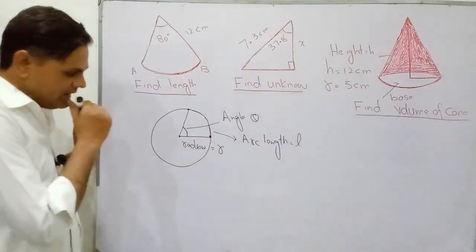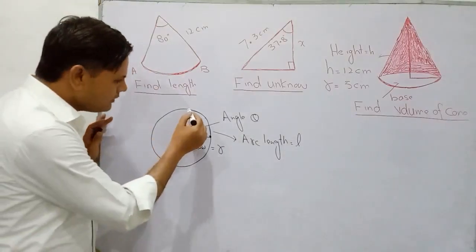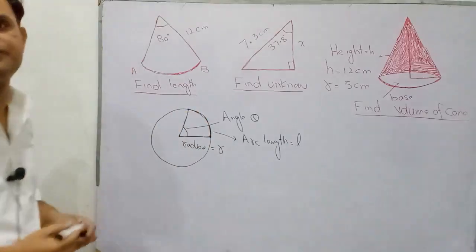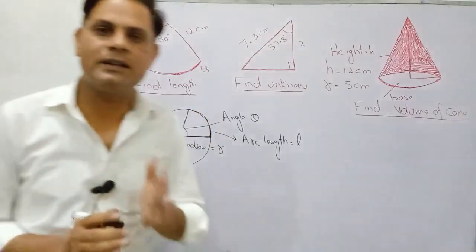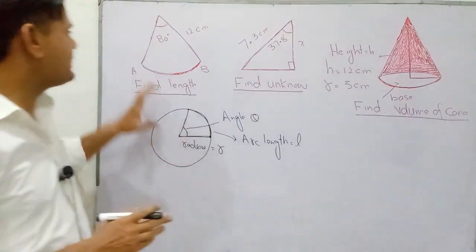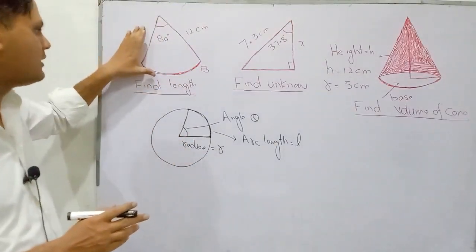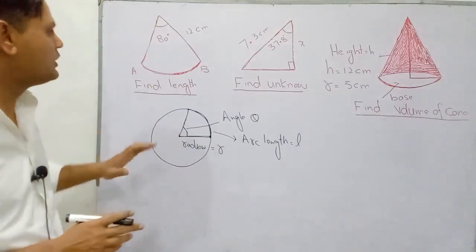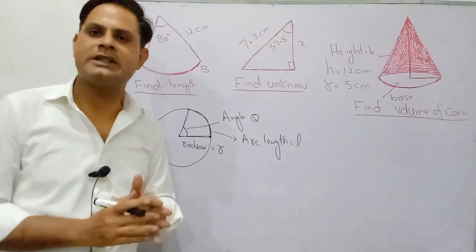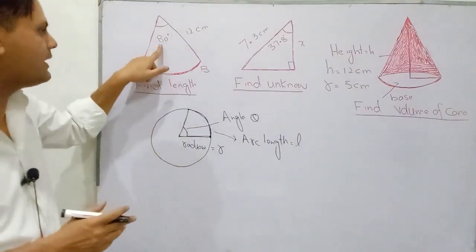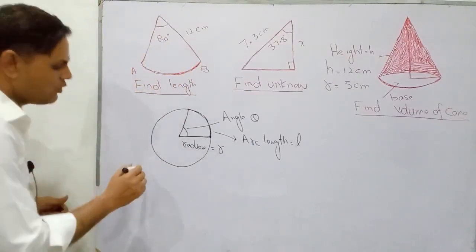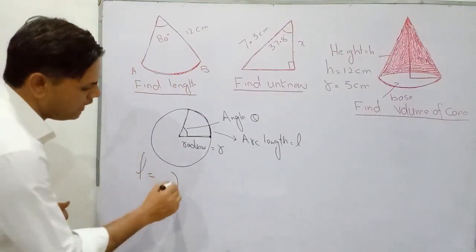This part of the circle is a sector. A sector is a part of a circle but not a complete circle. It is called sector. If some quantities are given, then you find other quantities — if theta is given and radius is given, then to find the length of this arc, use the formula L is equal to R theta.